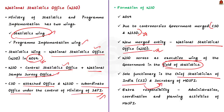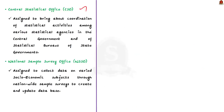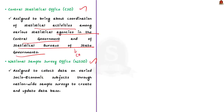The Chief Statistician of India is also the Secretary of the Ministry of Statistics and Programme Implementation. In the restructuring exercise of the Indian statistical system, the administrative coordination and planning activities of the ministry have also been brought into the NSO. The main responsibility assigned to the CSO is to bring about coordination in statistical activities among various central government agencies and state government statistical bureaus. The main responsibility assigned to the NSSO is to collect data on varied socioeconomic subjects through nationwide sample surveys to create and update a database usable in policy formation, programme implementation, and research.